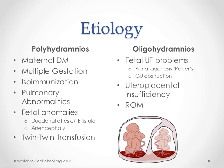It's a simplistic and not entirely accurate way to look at it, but it's helpful for remembering that if you have problems with your upper GI system — like duodenal atresia or a tracheoesophageal fistula — you're not going to be getting fluids in, so the fluid stays outside and you get polyhydramnios.